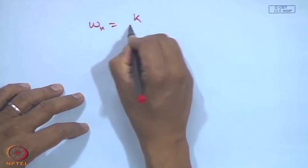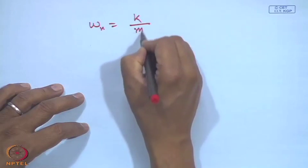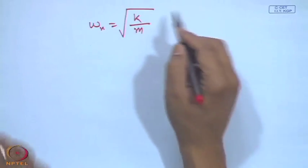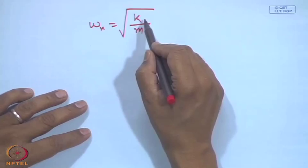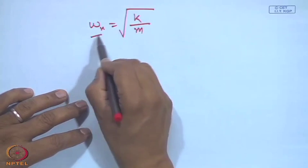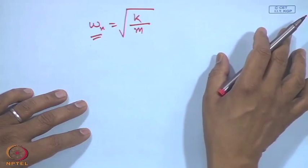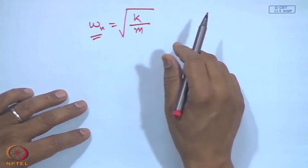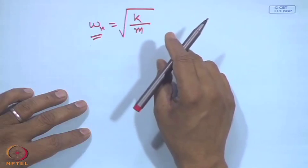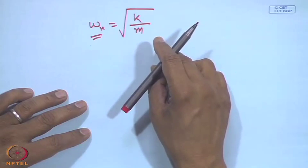The natural frequency of any system is the square root of k over m. So if there is a change in stiffness, obviously there is a change in natural frequency. By doing the Eigen value analysis of a system we can find out the change in natural frequency and then determine that a crack has occurred.